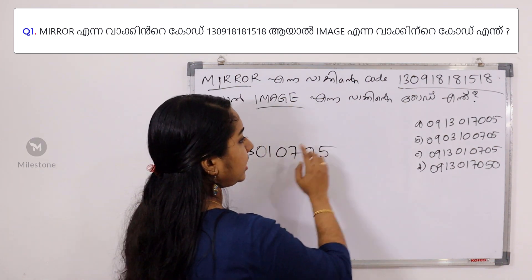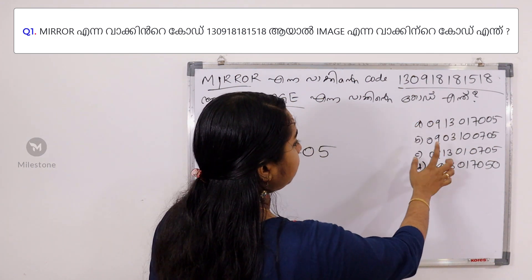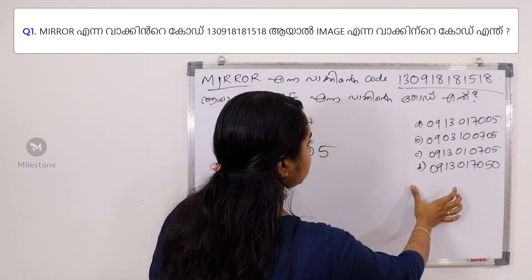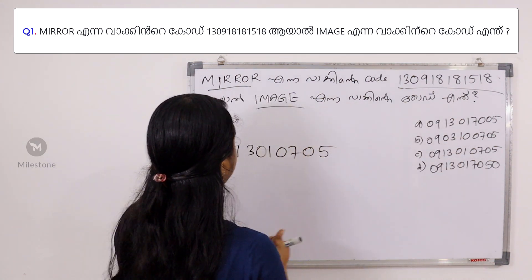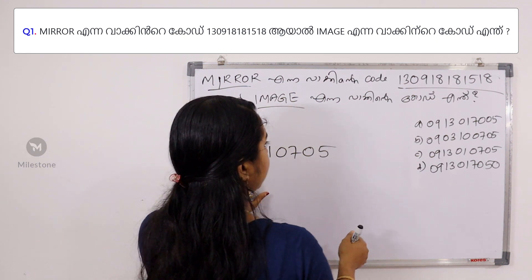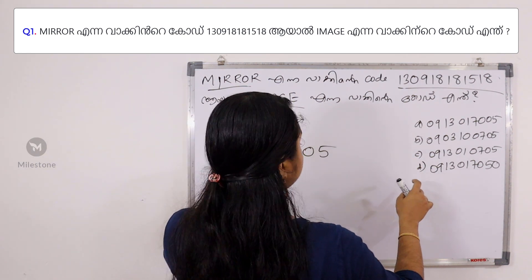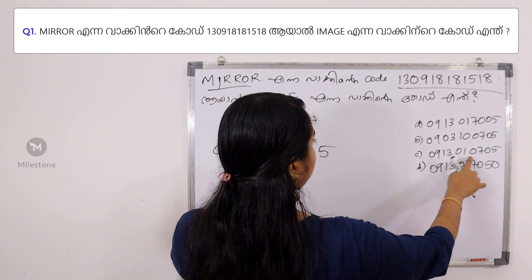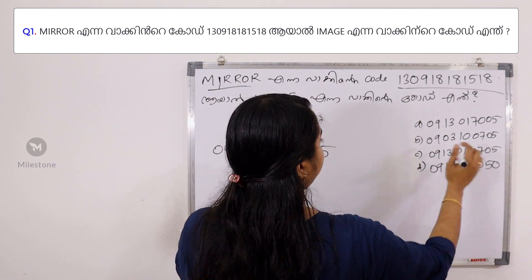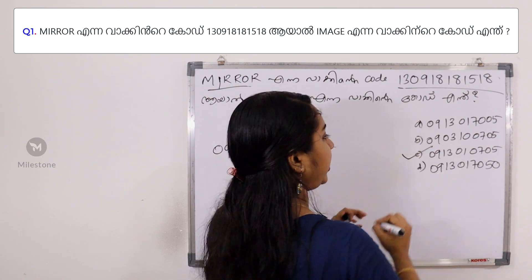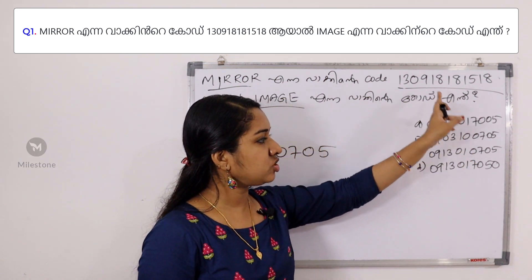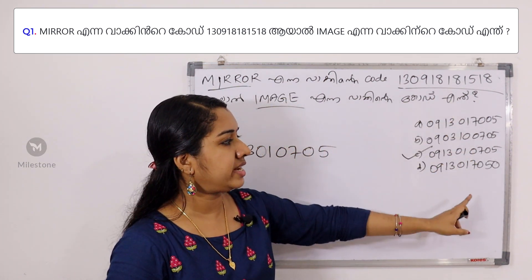This is the answer. You can read it: 1, 1, 3, 0, 1, 0, 7, 0, 5. Option C is the answer.